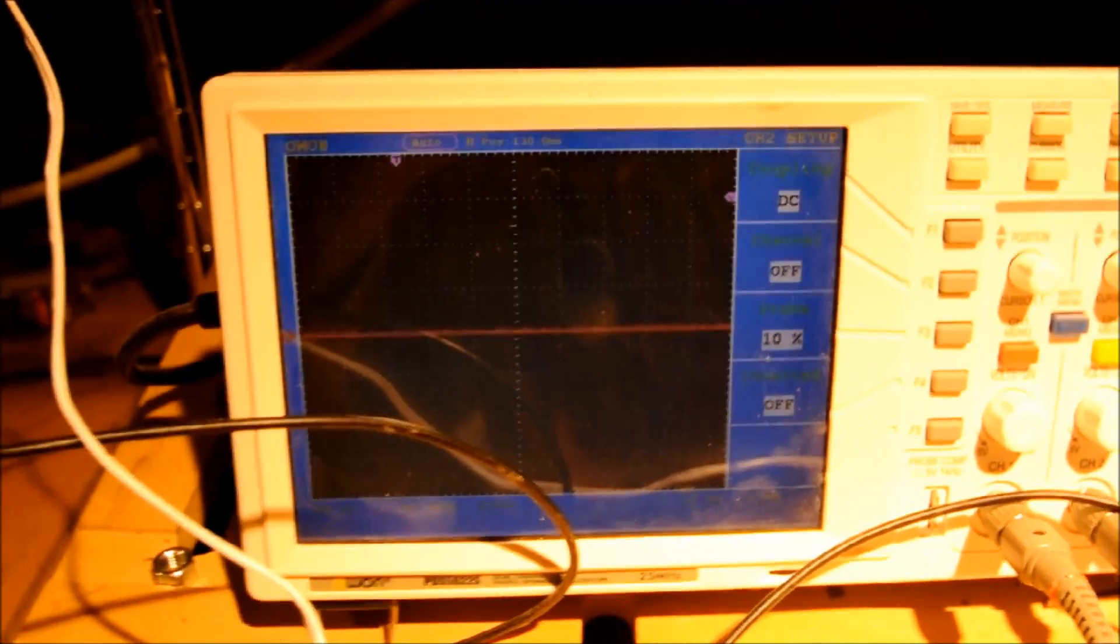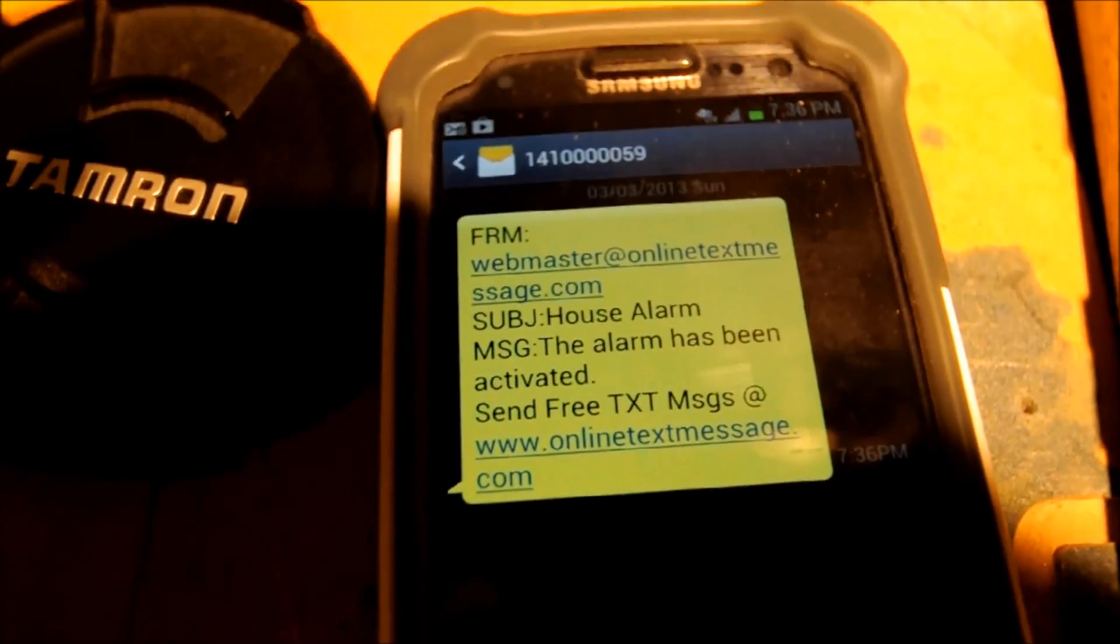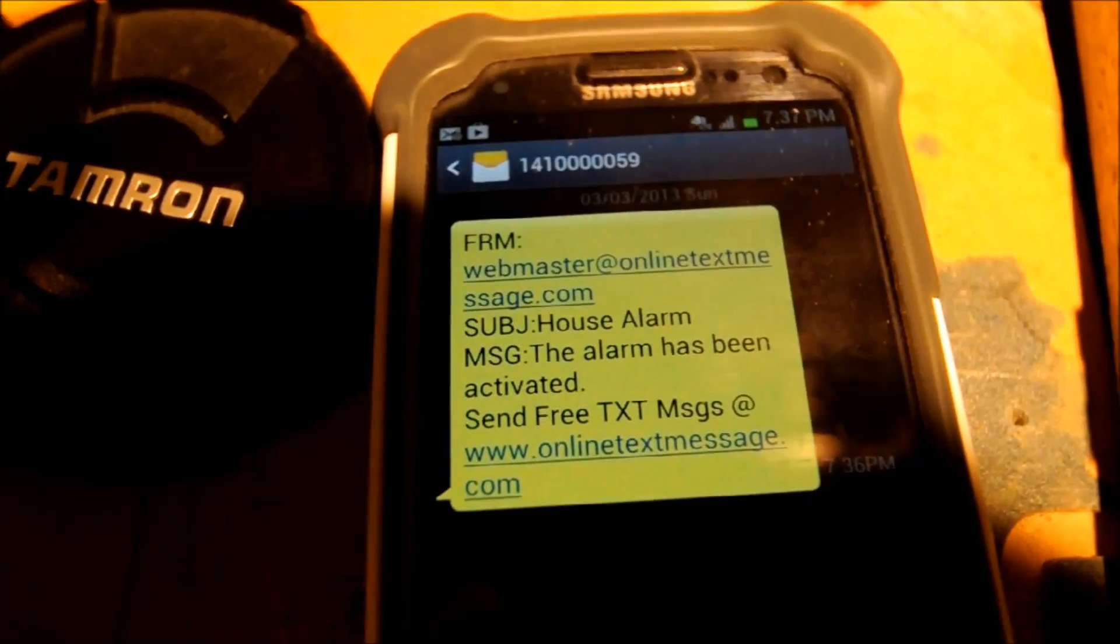The clock says it is 736. I'm going to hit run on this thing. The oscilloscope says nothing's happening. Alright, I'm going to set the alarm. And now we're going to set it off. Here we go. New text message. And it says... The house alarm has been activated. Pretty cool.